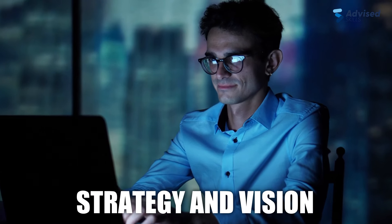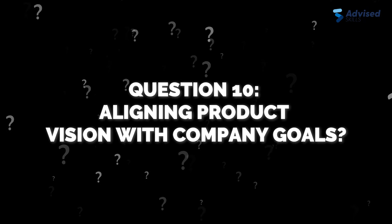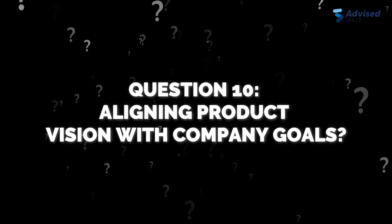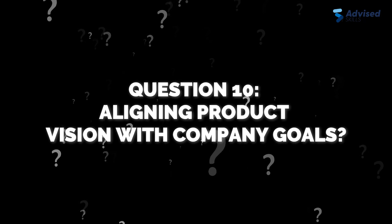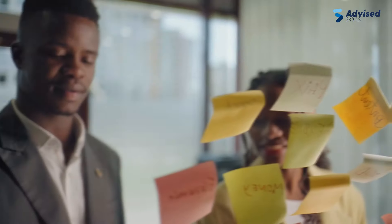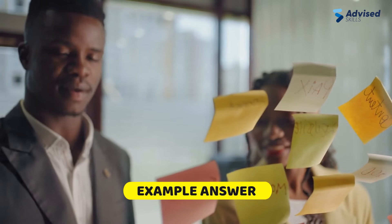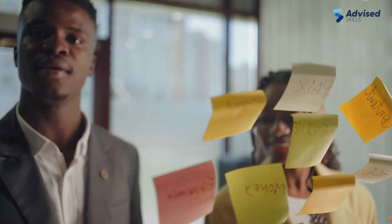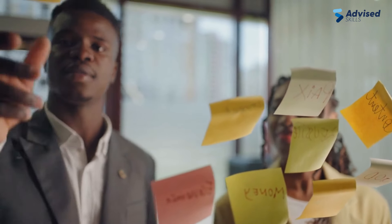Section 4: Strategy and Vision. Question 10: How do you align product vision with company goals? Example answer: regularly review company goals and collaborate with senior management to align the product roadmap.